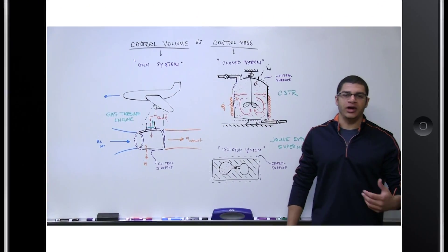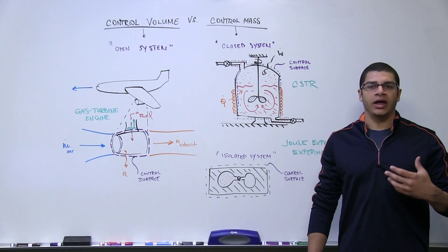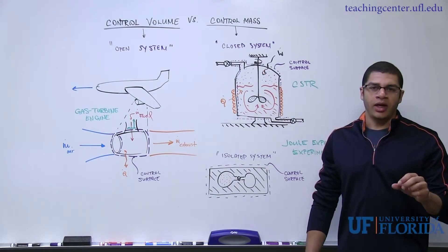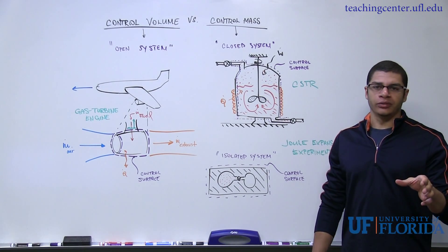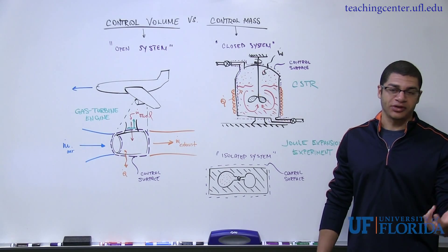I want to talk about the difference between a control volume and a control mass, and in particular how to identify either type of system.